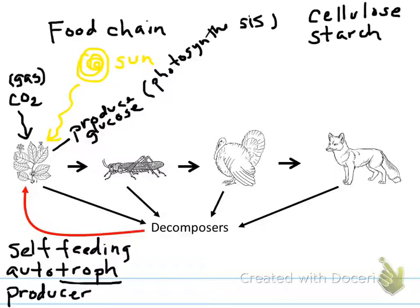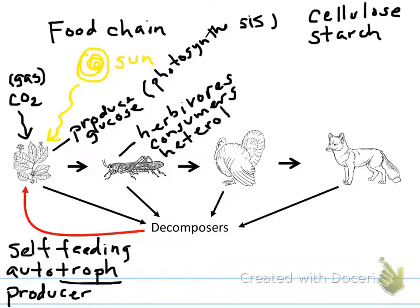Now, at the second level of the food chain, these guys here, these are what we call herbivores. They consume food, they don't make it themselves, so we call them consumers. And because they have to eat something else, they're not self-feeding, we also have a term called heterotroph, which just means other feeding. Now, what you'll find is as you move up the food chain, each one of the levels above plants can also be called a consumer and a heterotroph. And each level tends to have its own designation.